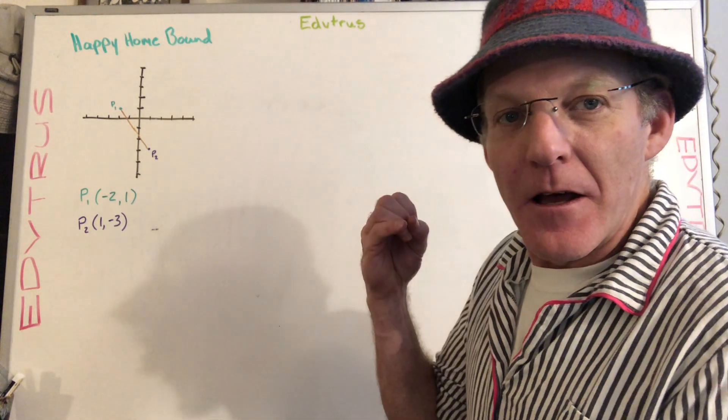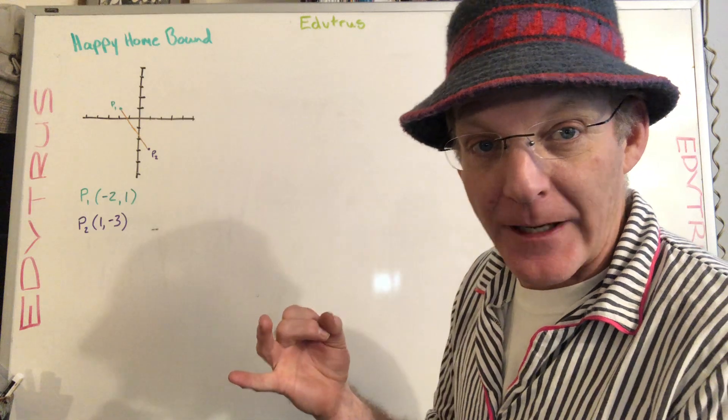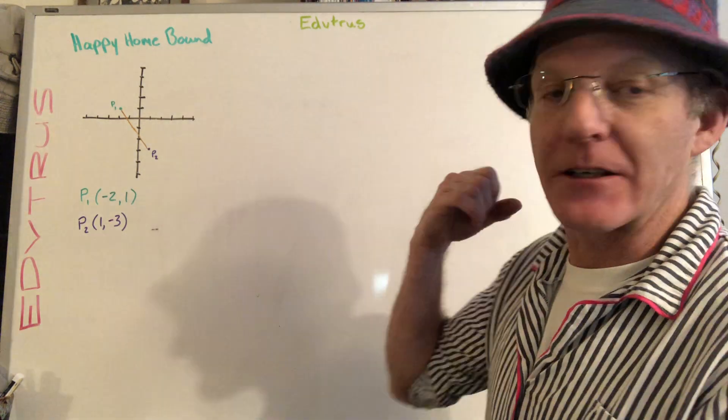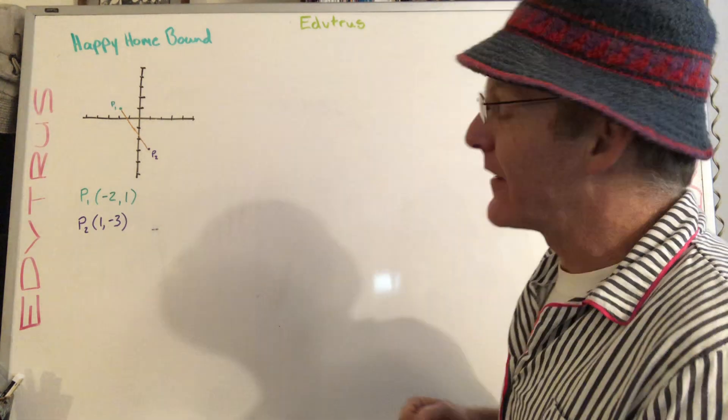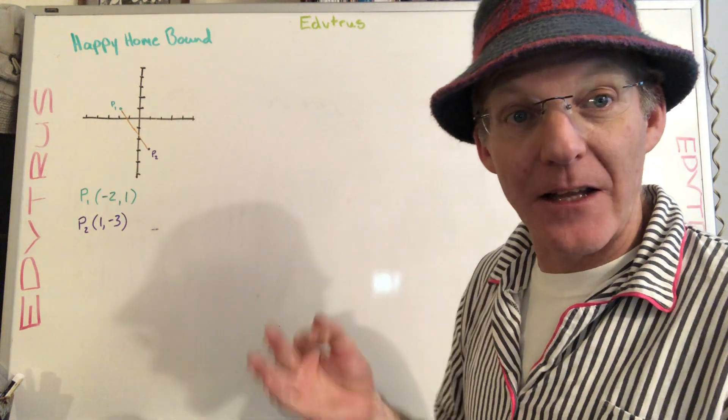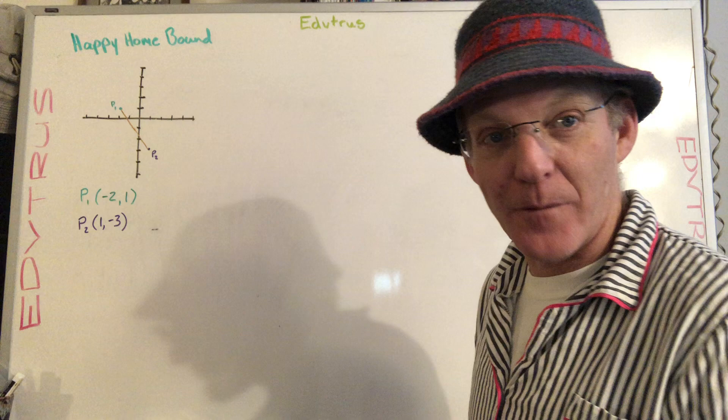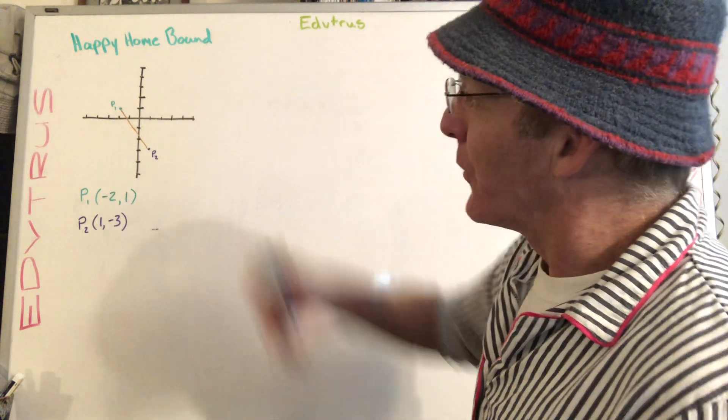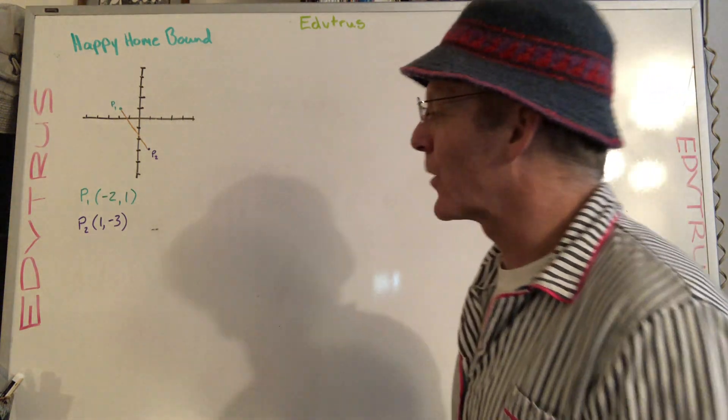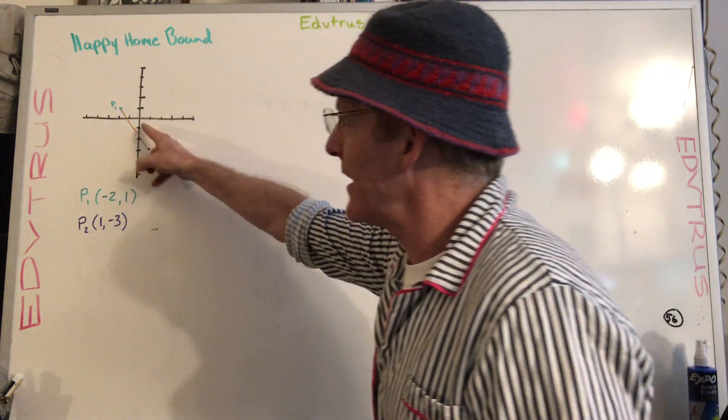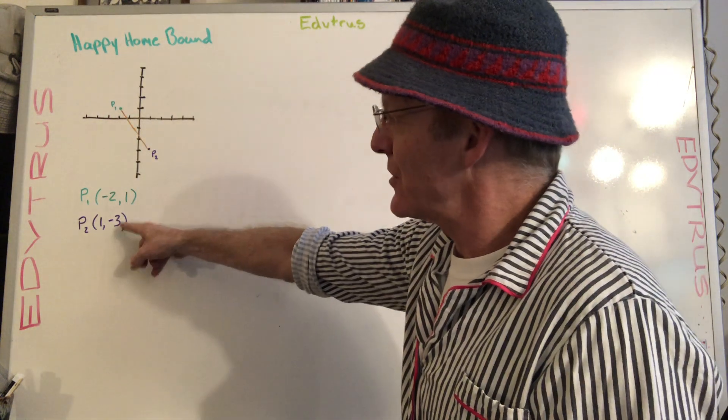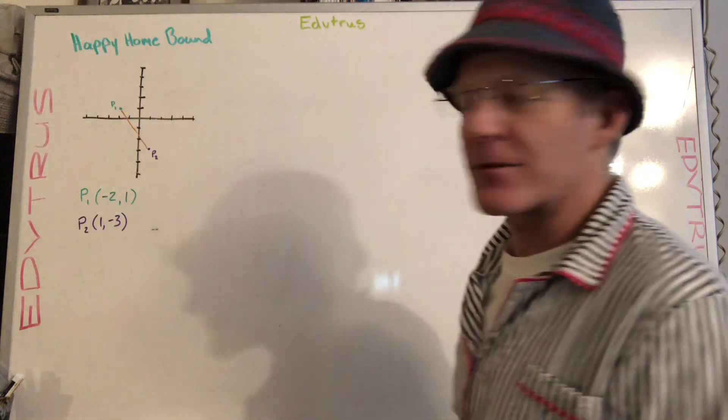Today what we're going to be doing real quickly is distance formula and midpoint, then we're going to do a video on equations of circles, and then another one to remind you about completing the square, that process of going from standard form back to center form. So for this first one, we've got our two points here on a coordinate plane. We've got point one at negative 2 comma 1, and point two at 1 comma negative 3.